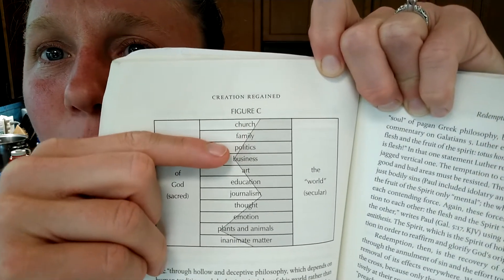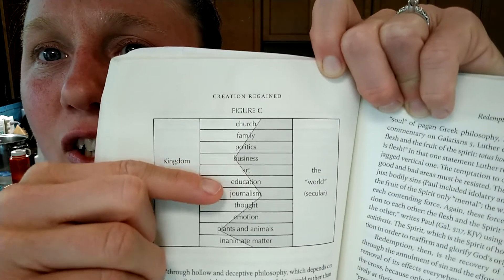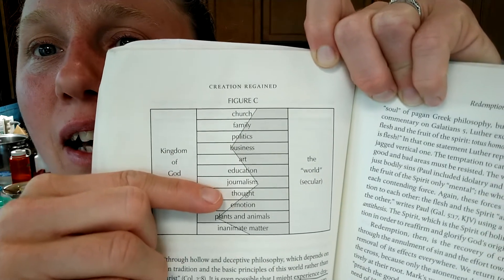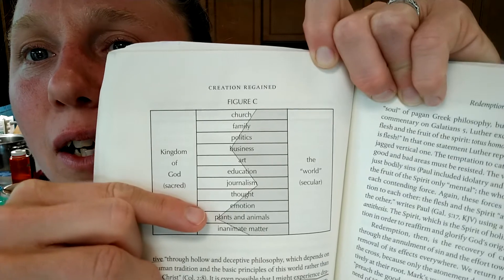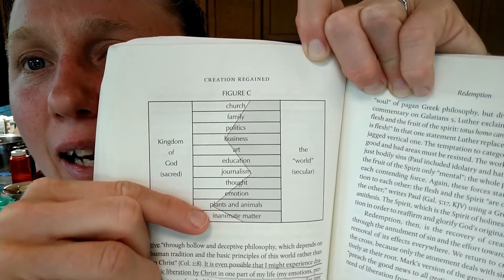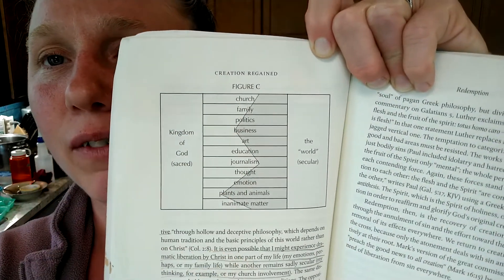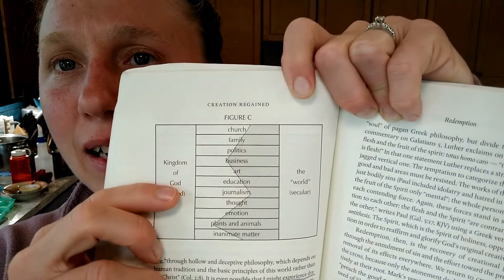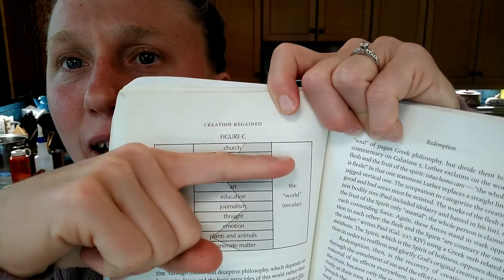We have the church, the family, politics, business, art, education, journalism, thought, emotion, plants and animals, inanimate matter, and the list would go on for a very long time, right?